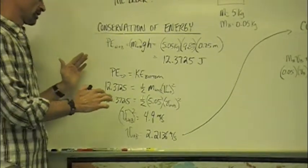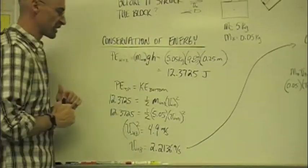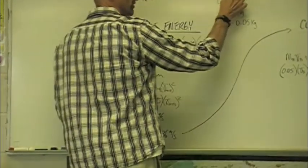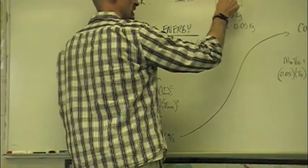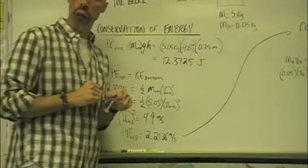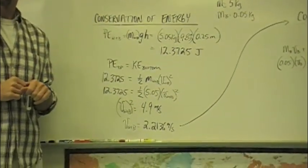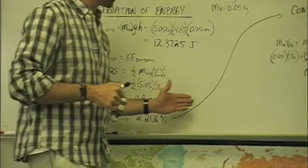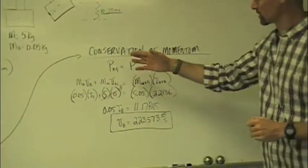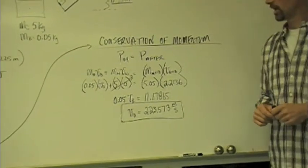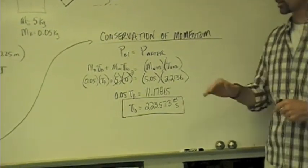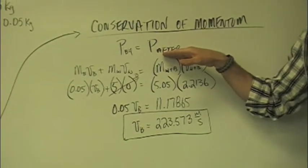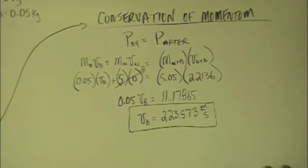So we are using the principle of conservation of energy to figure out how fast the block would be moving the instant that the bullet hit it and it started to move up. Once we know that, we can then come over here to the principle of conservation of momentum and we can utilize the fact that we know the momentum before the collision is going to equal the momentum after.